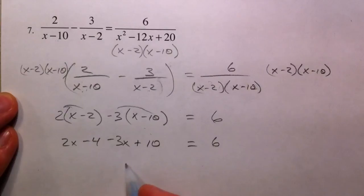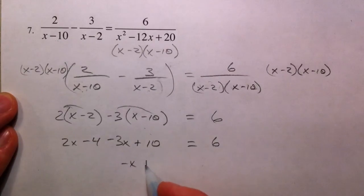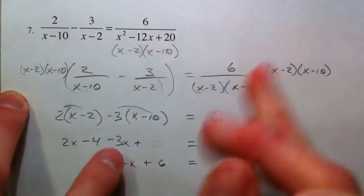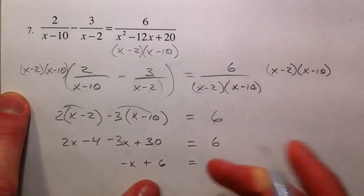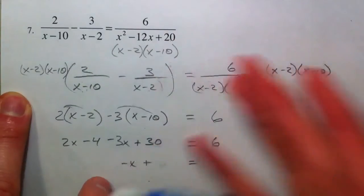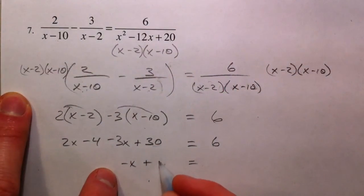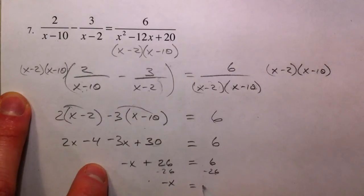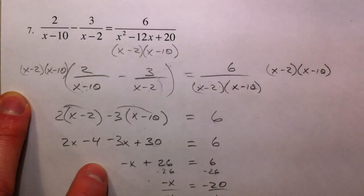So we get 2x minus 4, minus 3x plus 30 — because negative 3 times negative 10 is positive 30. Combining: 2x minus 3x is negative x, and negative 4 plus 30 is 26. That equals 6, so subtracting 26 gives negative x equals negative 20, and dividing by negative 1 gives x equals positive 20.